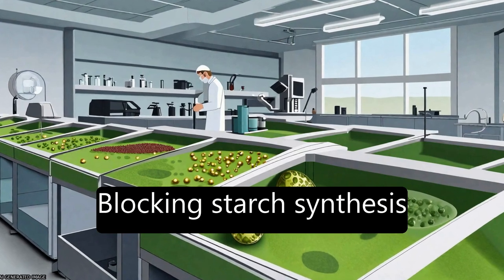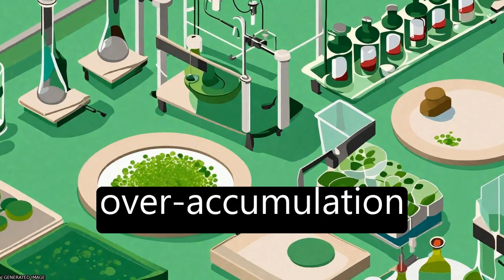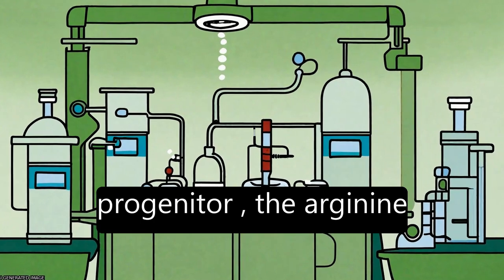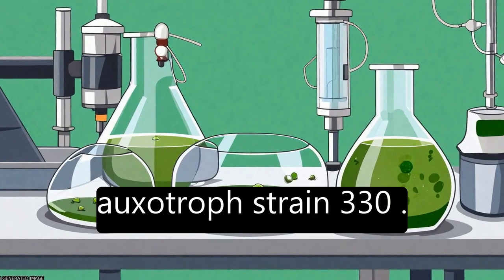Blocking starch synthesis did not result in TAG overaccumulation compared to their direct progenitor, the arginine auxotroph strain 330.